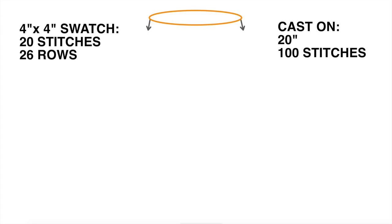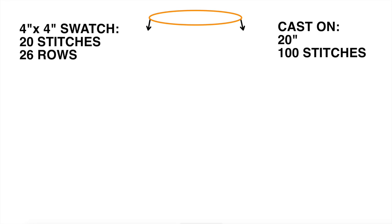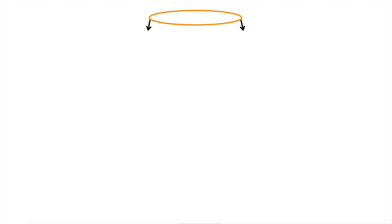Then I'll decide if I want a turtleneck. If I do, I'll knit as many rows as I need for my desired length. If I don't want a turtleneck, I'll knit an edge — either ribbing or one that curls up — and I'd probably knit four to six rows for my edge.